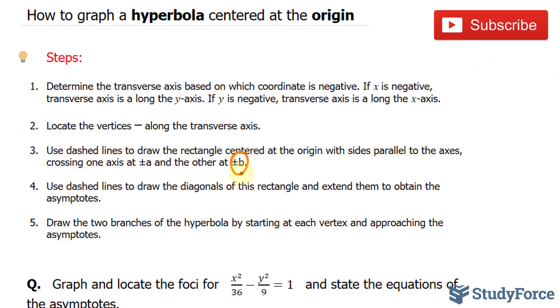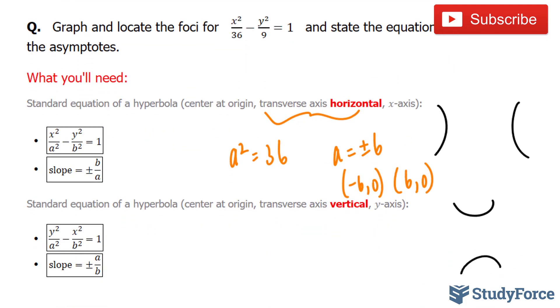So to find out this one, plus minus b, we will do the same thing. Where we have b² is equal to 9, square root both sides, we end up with plus minus 3 is equal to b.